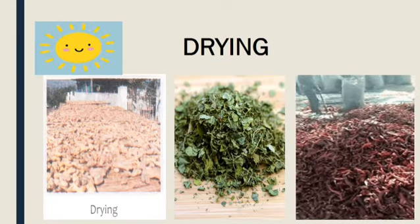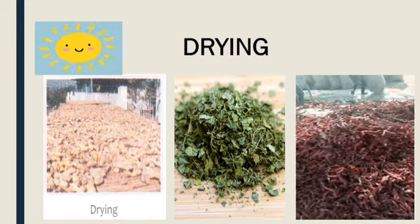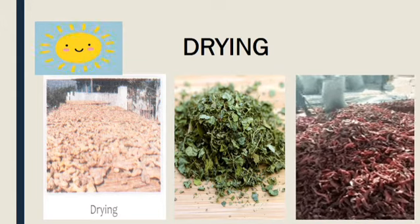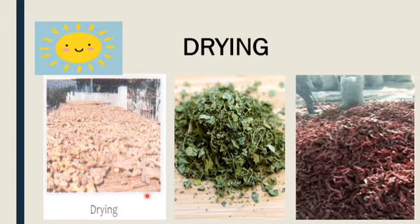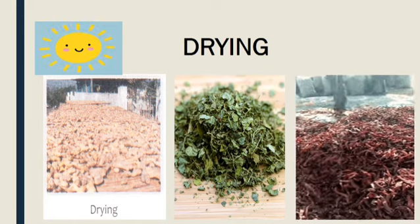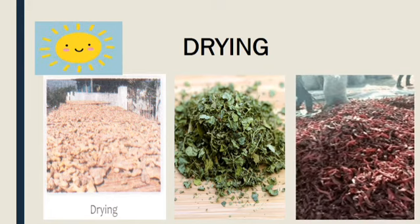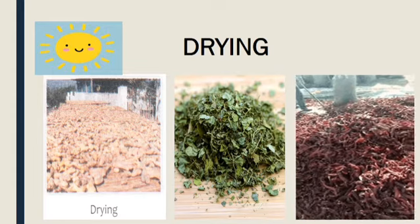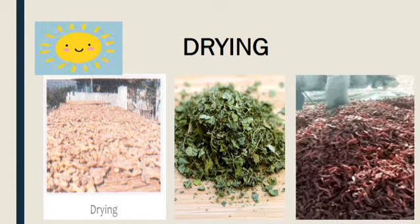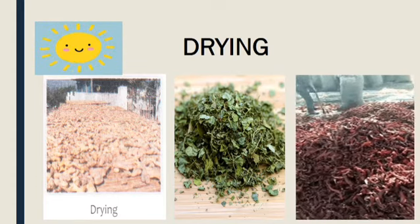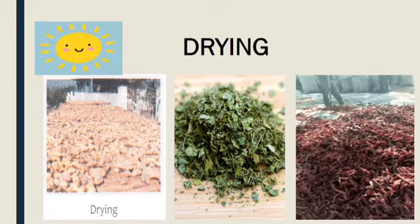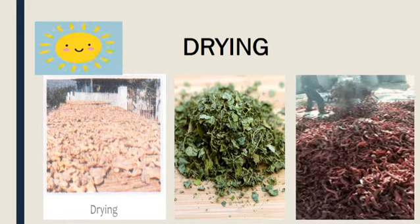Next method is drying. In this method, we dry the food items under the sun. Sunlight mein food item ko sukhaya jata hai aur phir store kiya jata hai. Aapne ghar mein dekha hoga — methi ke patte, fenugreek leaves ko dhooop mein sukhaya jata hai aur store kiya jata hai, aur phir hum use lambe samay tak use kar sakte hain. Aise hi, red chili — lal mirch ko bhi sukhaya jata hai aur phir use ki jati hai.